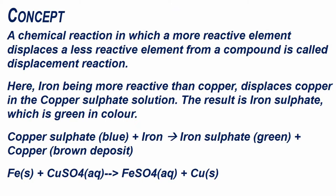A chemical reaction in which a more reactive element displaces a less reactive element from a compound is called displacement reaction. Here, iron being more reactive than copper displaces copper in the copper sulfate solution. The result is iron sulfate which is green in color. The equation for this reaction is copper sulfate plus iron gives iron sulfate plus copper.